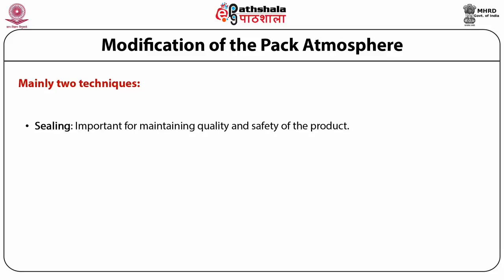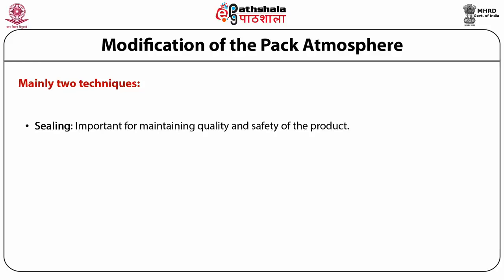Packs are discharged as a continuous arrangement of filled and sealed packs from a thermoform fill seal machine, and the final operation is to separate them into individual packs. This can be carried out by two methods: die cutting and longitudinal and transverse cutting. Die cutting is achieved in one operation where a shaped blade is forced through the film clamped in place by a frame assembly. Transverse cutting separates packs into rows using guillotines or punches driven through the film supported by anvils, which may be carried out in conjunction with longitudinal cutting where circular knives cut through tray flanks parallel to the length of the film.